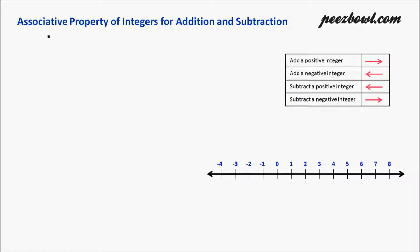Let us understand the associative property of integers for addition and subtraction. This property says that whenever we are adding more than two integers, we can add them in any order. For example, we have three integers a, b, and c. According to this property, (a + b) + c should be equal to a + (b + c).